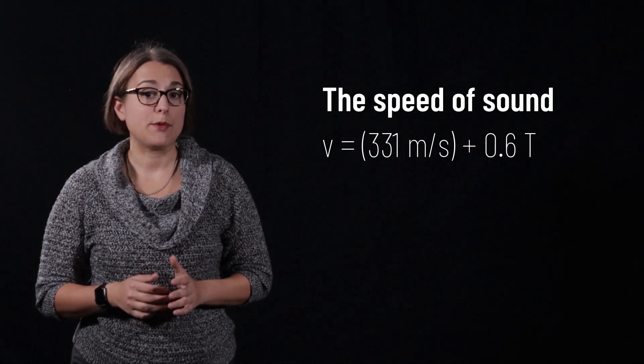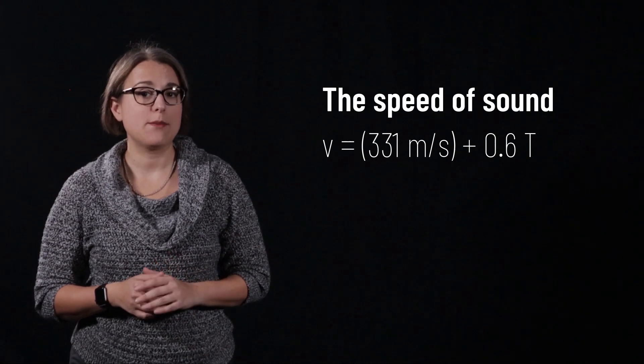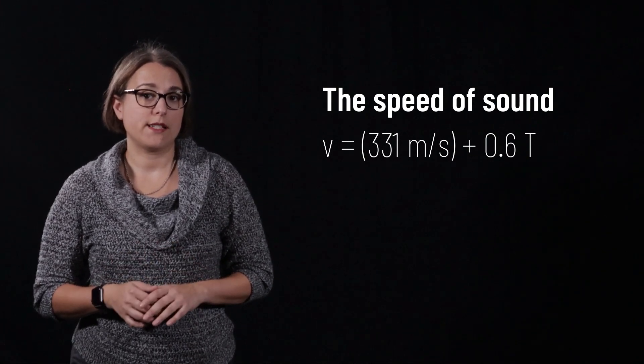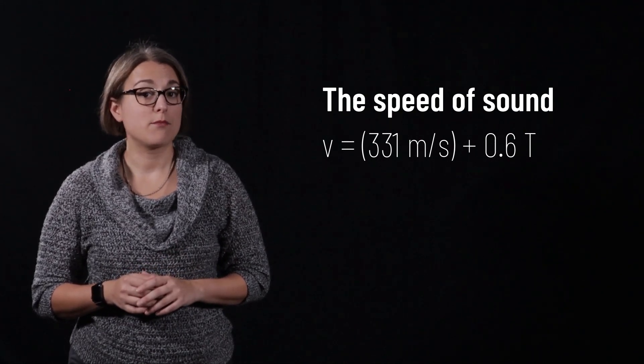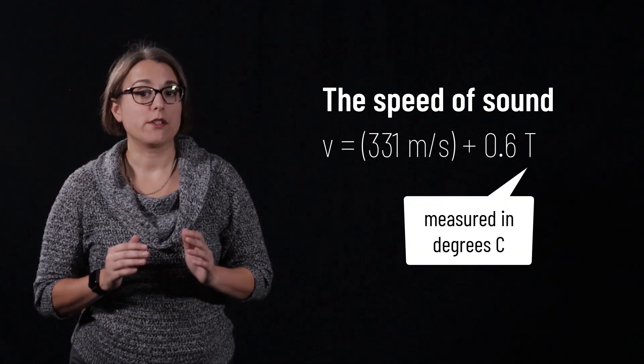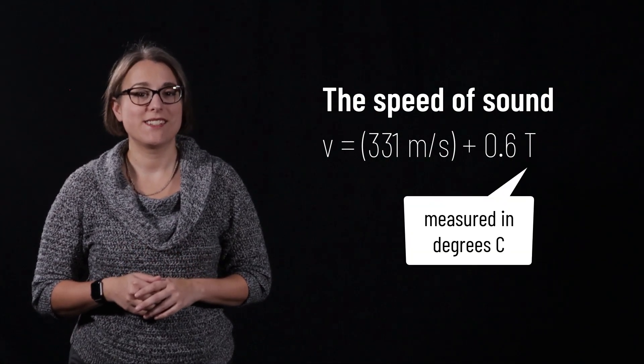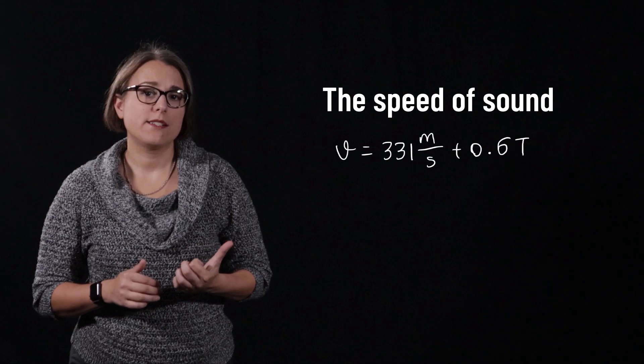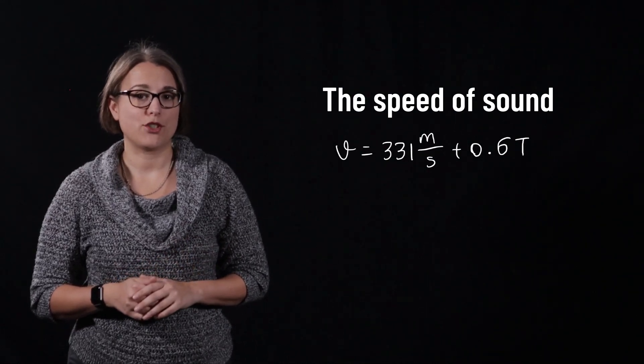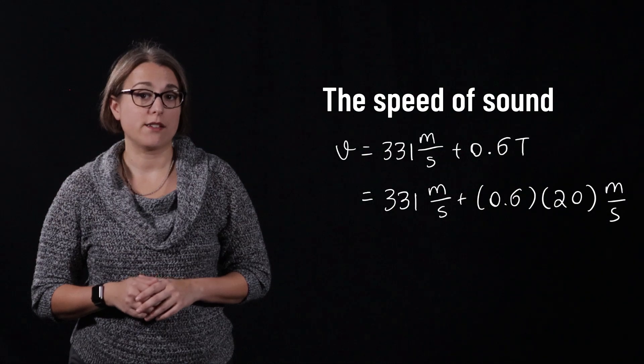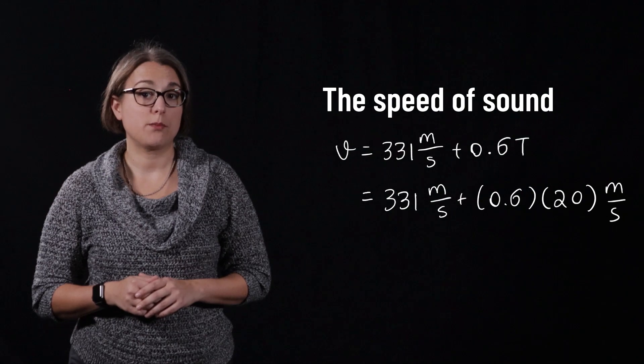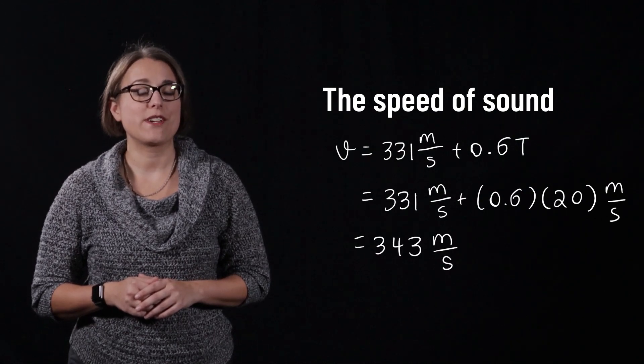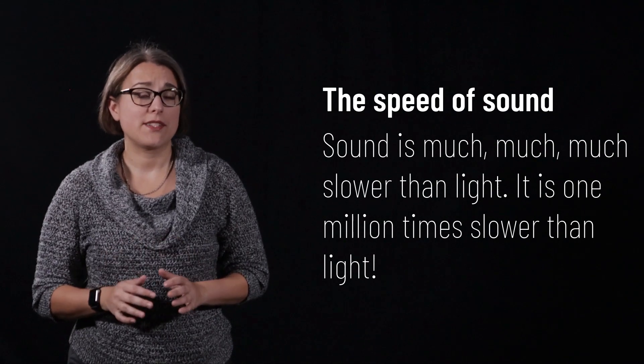This equation was experimentally derived, and air temperature is the independent variable. This equation states that the speed of sound at a given temperature is equal to 331 meters per second, plus 0.6 times T, where T is the temperature in degrees Celsius. Room temperature is approximately 20 degrees Celsius. Let's use the equation to determine the speed of sound at that temperature.